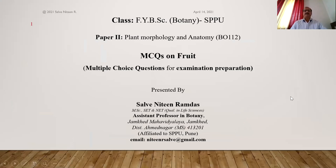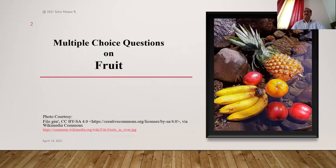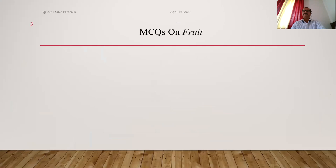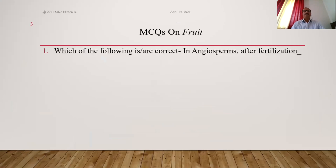Today's topic of our discussion is multiple choice questions on fruit. Botanically, fruit can be defined as a ripened and mature ovary of the flower. So we'll begin with the first question.